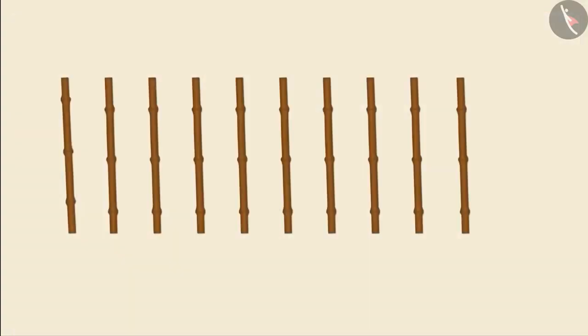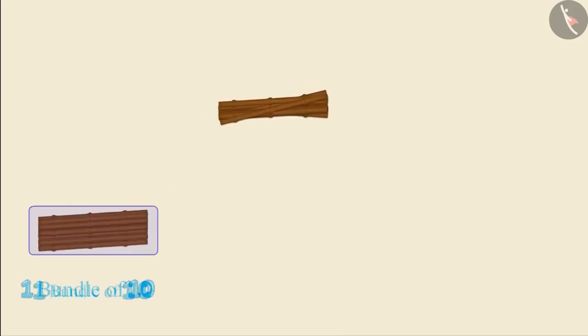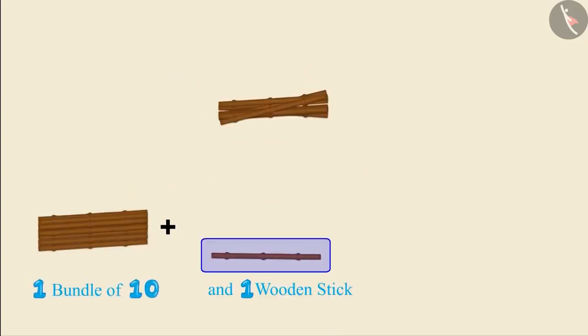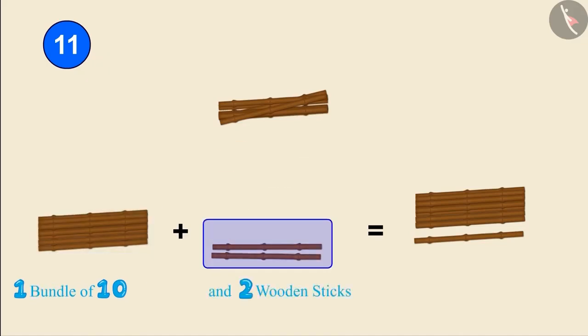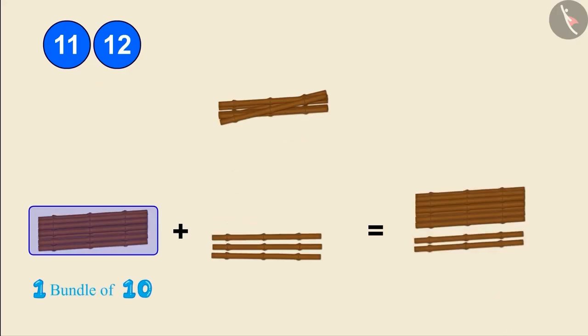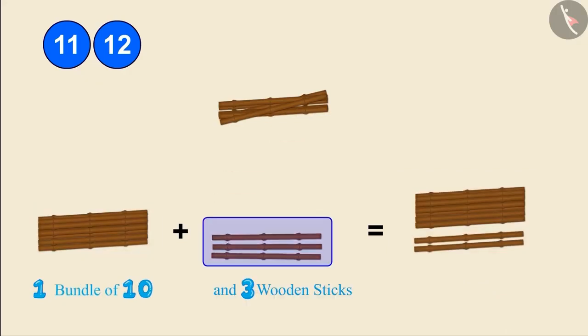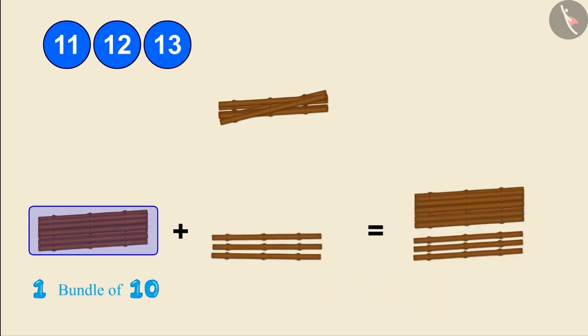Now let's count the remaining wooden sticks. These are 10 sticks, so let's make their bundle of 10 like this. One bundle of 10 and one more wooden stick make 11 wooden sticks. One bundle of 10 and two wooden sticks make 12 wooden sticks. One bundle of 10 and three wooden sticks make 13 wooden sticks.